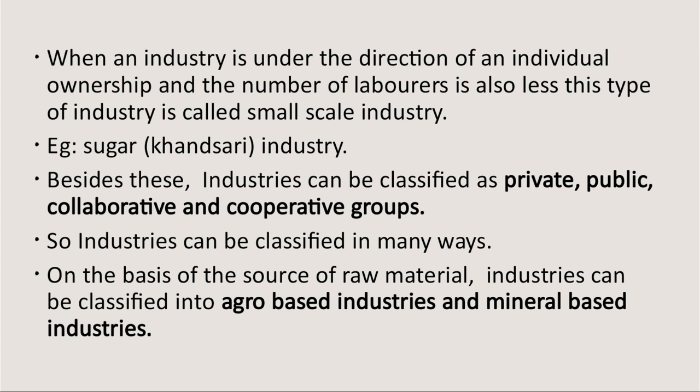Besides this, we have private industries, public industries, collaborative industries, and cooperative industries. Private industry means owned by one individual — for example, our school is a private industry. Public means government undertaking, under the control of government. Collaborative industry means it is the process of two or more people or organizations working together to complete a task or achieve a goal. Cooperative industries are owned and managed by a group of people. Generally the members are the producers of raw materials. For example, Amul is an example of a cooperative sector society. Majority of our handloom, food processing, and dairy products come under cooperative industries.